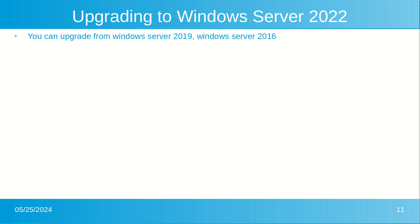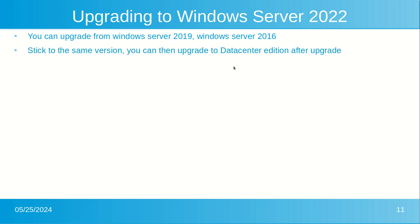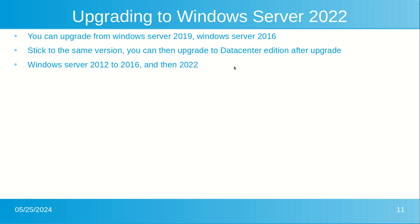For instance, if you had the Standard version in 2016 or 2019, stay with that Standard version on 2022. You can always upgrade to Datacenter if needed after the upgrade. You can also upgrade from 2012, but not directly — first upgrade to 2016 and then to 2022.